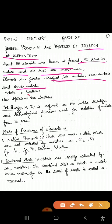Semi-metals are also known as metalloids. Metals are lustrous and electropositive in nature. They can combine with electronegative elements like carbon, oxygen, and sulfur. They form a variety of different compounds like oxides, sulfides, carbonates, sulfates, phosphates, and nitrates.